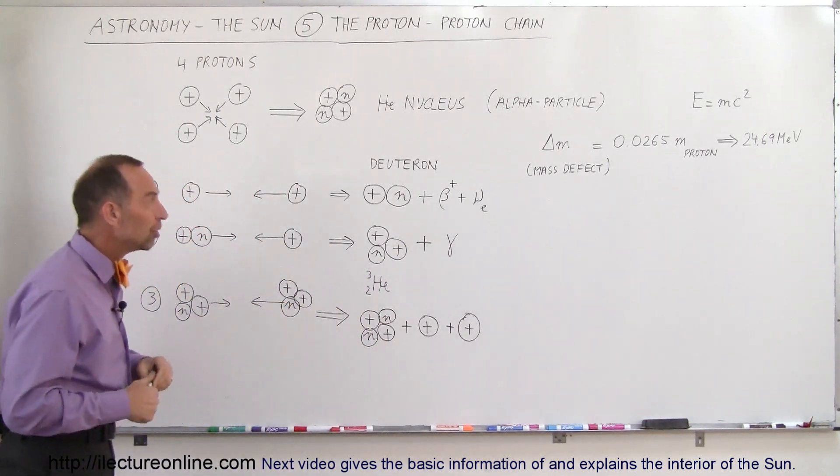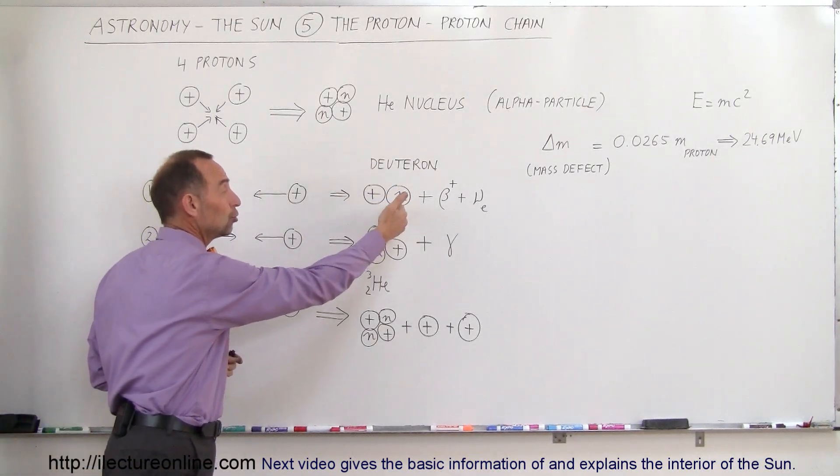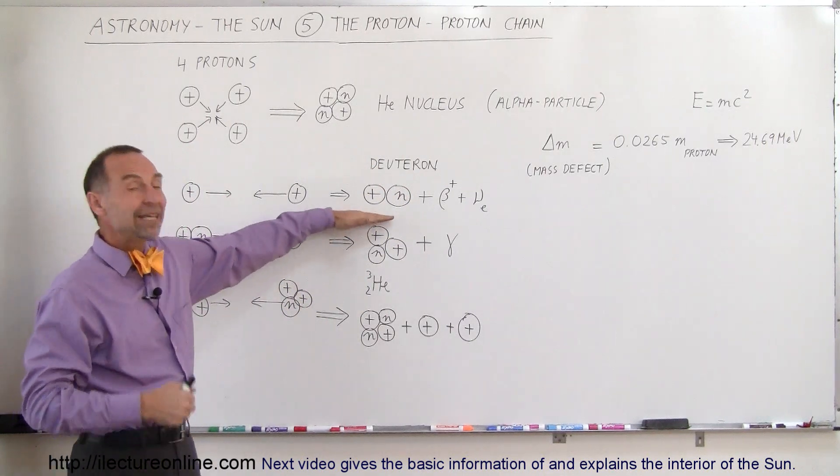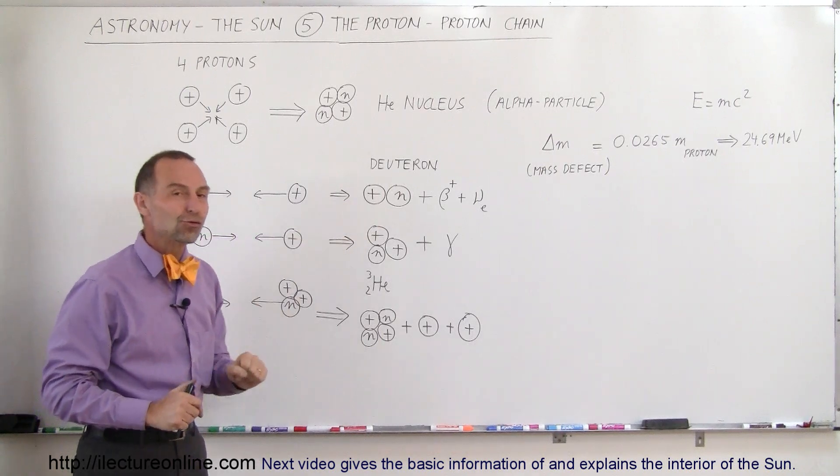After the two protons stick together and one of the protons converts into a neutron, now we have what we call deuteron, which is a heavy hydrogen. It's the isotope of hydrogen, which has one proton and one neutron.